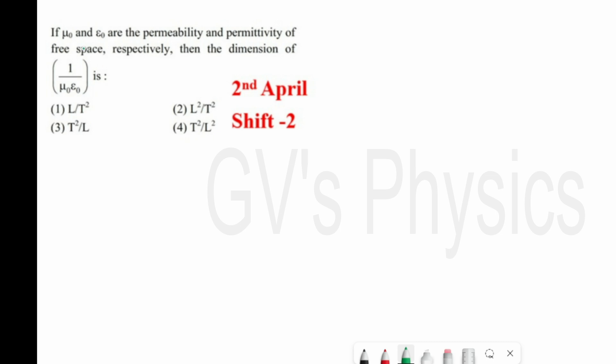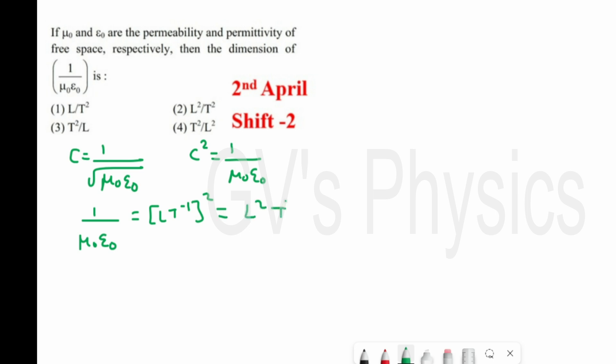Next is a most important and famous question: if μ₀ and ε₀ are the permeability and permittivity of free space, find the dimension of 1/(μ₀ε₀). Using the electromagnetic formula c = 1/√(μ₀ε₀), squaring both sides gives c² = 1/(μ₀ε₀). Since c is velocity with dimension LT⁻¹, c² = L²T⁻². Option 2 is the right answer.